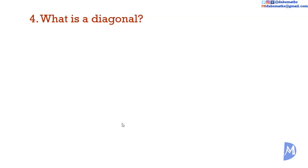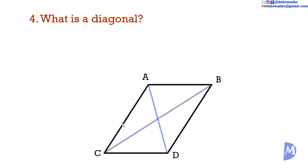Question 4. What is a diagonal? A line segment joining two opposite vertices is referred to as a diagonal. The two diagonals are shown here.